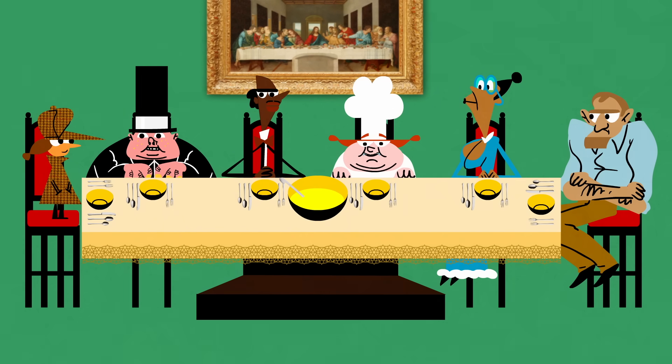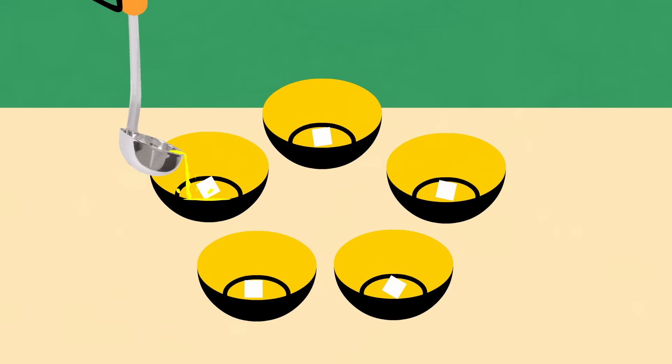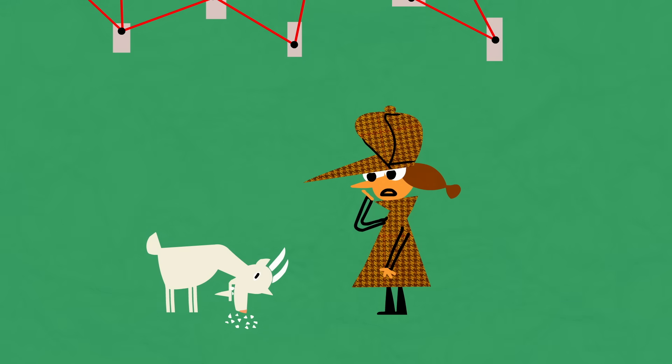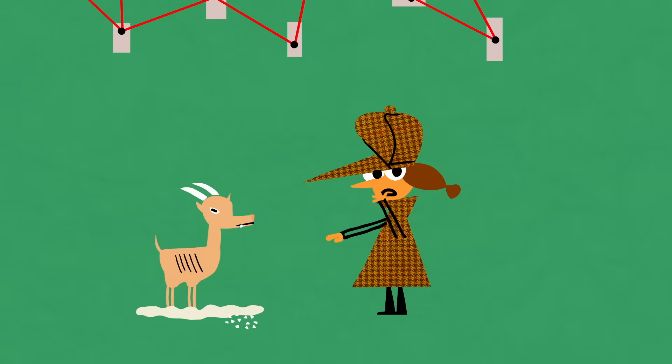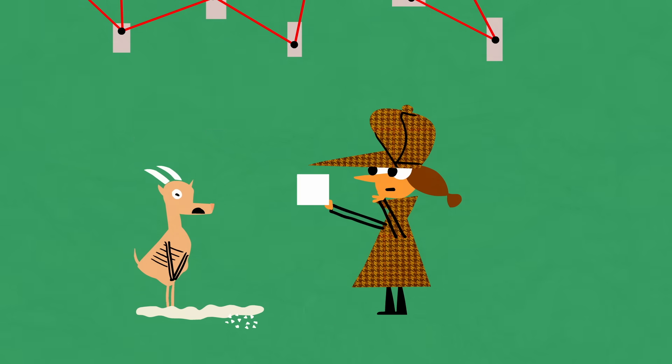You've invited them to dinner with a simple plan. You'll slip a square of a rare werewolf antidote into each of their dinners. Unfortunately, your pet goat just ate four of the squares, and you only have one left.